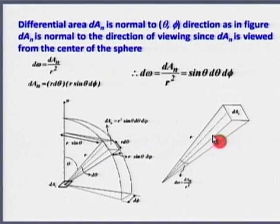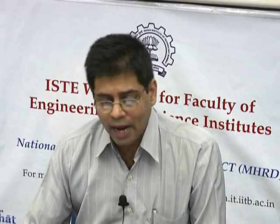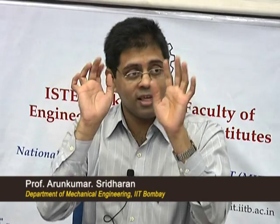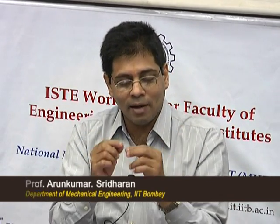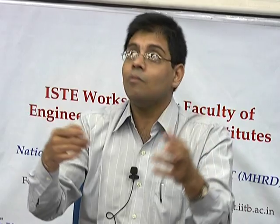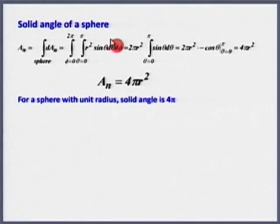This is how I get the solid angle. By definition, dω = dAn / r². So this divided by r² will give me solid angle: dω = sinθ·dθ·dφ. r² cancels with r² in the denominator — sinθ·dθ·dφ, that is what. So this is the definition of solid angle. Please keep this in mind; we are just doing simple math here. Solid angle of a sphere — what should it represent?